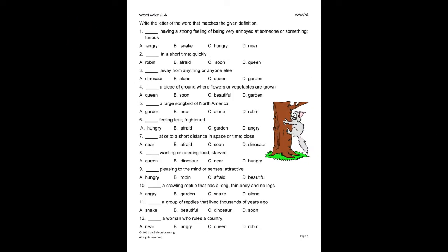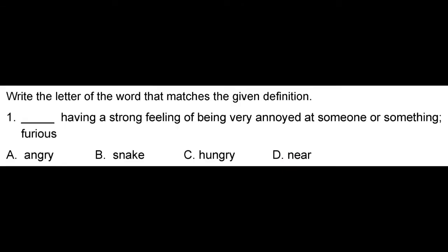On this exercise, the student will write the letter of the word that matches the given definition. Let's do number one for example. First, read the given definition. Having a strong feeling of being very annoyed at someone or something, furious. Now, look at each answer choice. Angry, snake, hungry, or near. Since the word angry best matches the definition, we know angry is the correct choice. So, we will circle the correct answer and write the letter on the line.